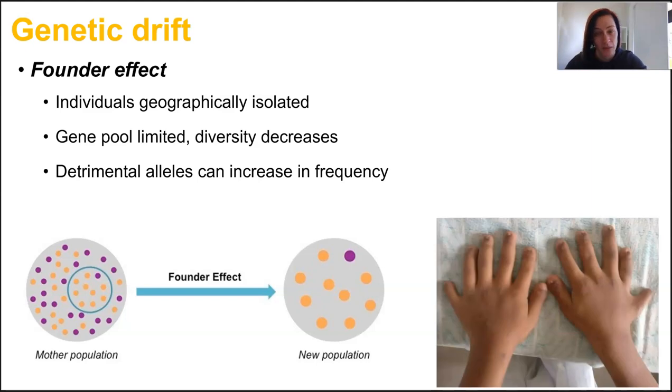So an example of this is the Amish community within the US. It originally started with only about 200 people and they don't bring in a lot of new recruits. So there's no gene flow in that small population. And given that one of the founders of the community has a syndrome known as Ellis van Kreveld syndrome, a rare recessive syndrome that leads to skeletal abnormalities and polydactyly, which is extra fingers and toes, there's a really high proportion of this syndrome found in the Amish community compared to the wider population.